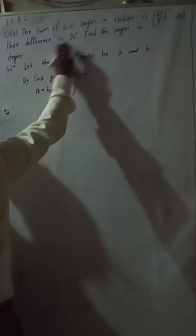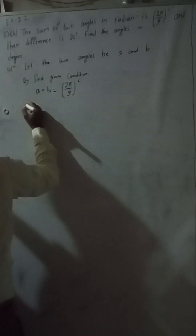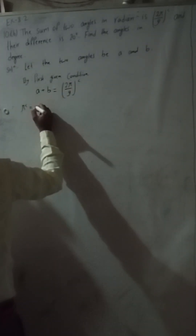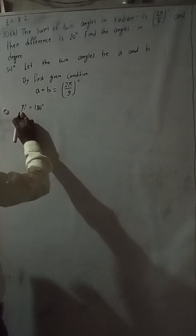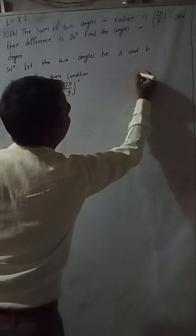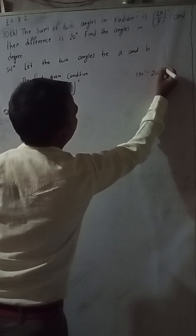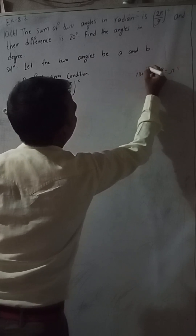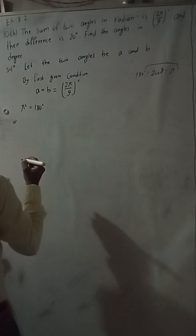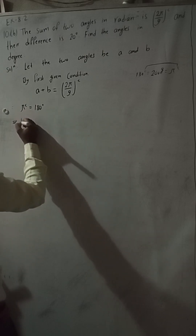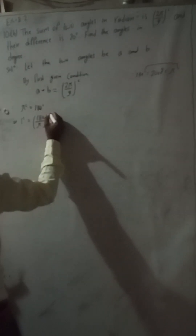Now we have to convert this radians into degrees because we have to find the angles in degree. We know that π radians is equal to 180 degrees, so one radian is equal to 180/π degrees.